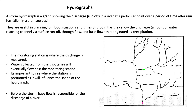So let's ask ourselves the question: what exactly is a storm hydrograph? A storm hydrograph is a graph showing the discharge in a river at a particular point over a period of time after rain has fallen in a drainage basin. They are useful in planning for flood situations and times of drought as they show the discharge that originated as precipitation.